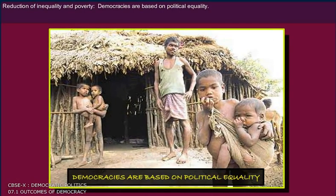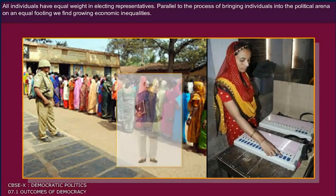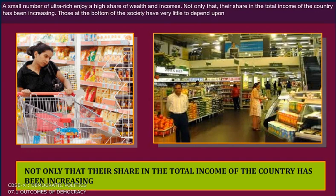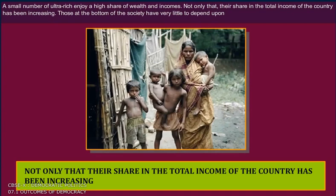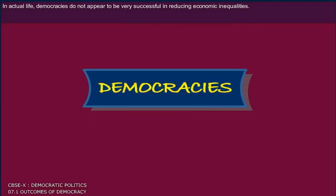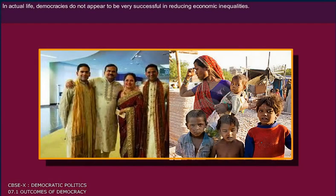Reduction of inequality and poverty. Democracies are based on political equality — all individuals have equal weight in electing representatives. Parallel to the process of bringing individuals into the political arena on an equal footing, we find growing economic inequalities. A small number of ultra-rich enjoy a higher share of wealth and incomes, and their share in the total income of the country has been increasing. Those at the bottom of the society have very little to depend upon — their incomes have been declining. Sometimes they find it difficult to meet their basic needs such as food, clothing, housing, education and health. In actual life, democracies do not appear to be very successful in reducing economic inequalities.